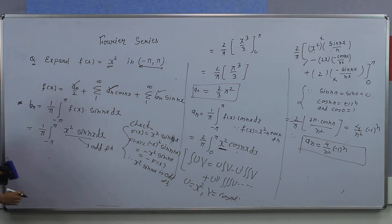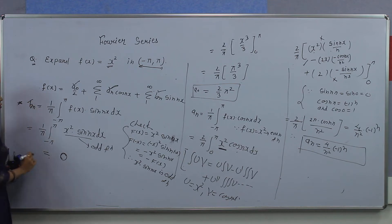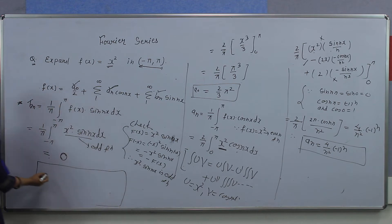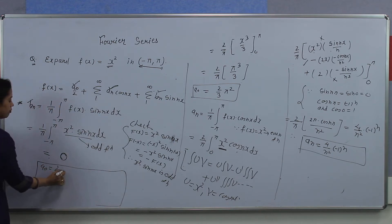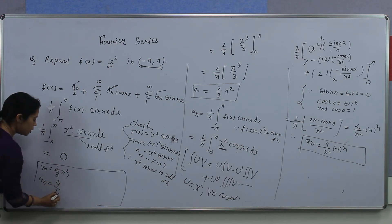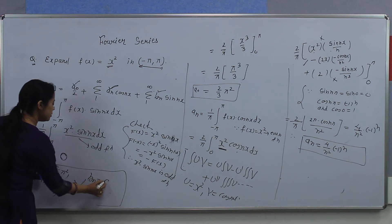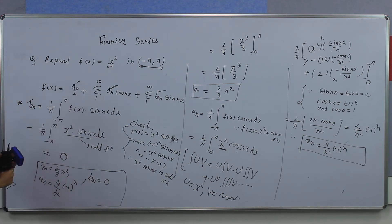Since it has been integrated between the limits minus pi to plus pi, its value is 0. So bₙ is 0. We have found a₀, aₙ, and bₙ: a₀ was 2π²/3, and aₙ was 4 divided by n squared into minus 1 to the power n, and bₙ is 0.